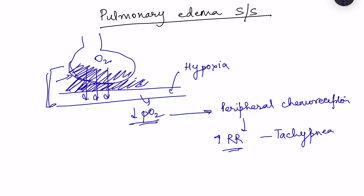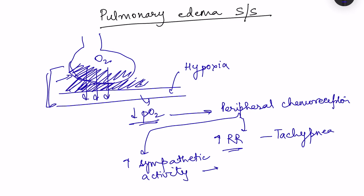Peripheral chemoreceptors not only affect the respiratory system but also cause increase in sympathetic activity. Stimulation of peripheral chemoreceptors increases sympathetic activity, which in turn leads to tachycardia - increase in heart rate. So tachycardia is another symptom of pulmonary edema.